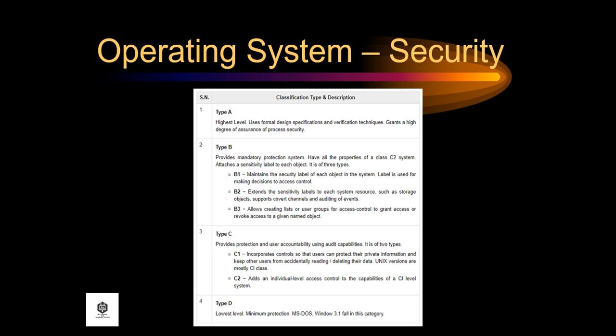Type C provides protection and user accountability using audit capabilities. It is of two types: C1, which incorporates controls so that users can protect their private information and keep other users from accidentally reading or deleting their data — Unix versions are mostly C1 class; and C2, which adds an individual-level access control to the capabilities of a C1 level system.